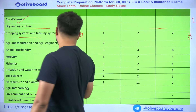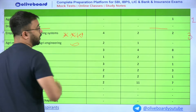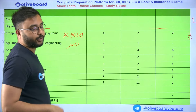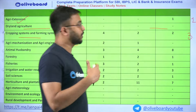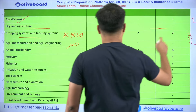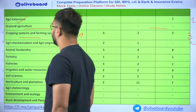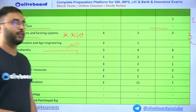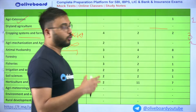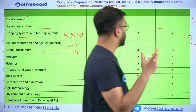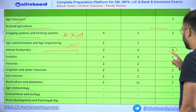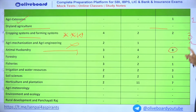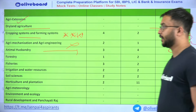Agri Mechanization and Agri Engineering covers questions related to equipment and machinery. In 2023 and 2024, 2 questions came from this topic. Animal Husbandry is very, very important — expect 3 to 5 questions always. In 2022 evening shift, 8 questions were asked, and in 2023, almost 6 questions were asked from animal husbandry.